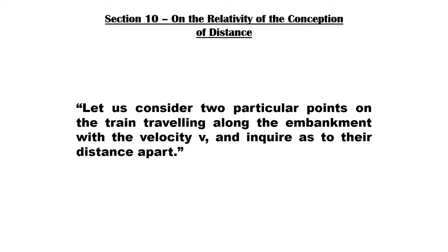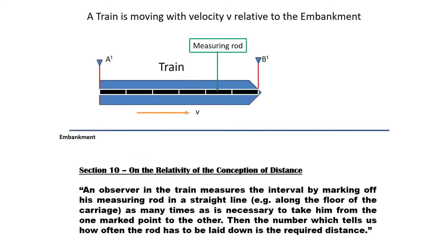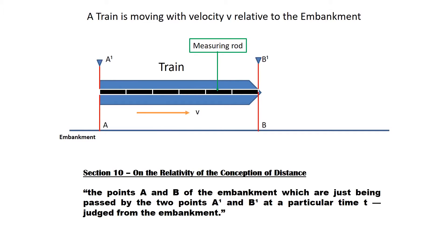Returning to the issue of length, Einstein asks us to consider two particular points on the train traveling along the embankment with velocity V, and to inquire as to their distance apart. For convenience, point B1 indicates the front of the train and point A1 indicates the end of the train. We use a measuring rod and mark off the number of times it takes to get from A1 to B1, assuming a whole number of times with no fractions.